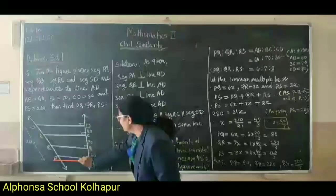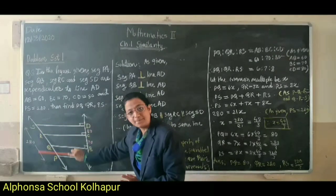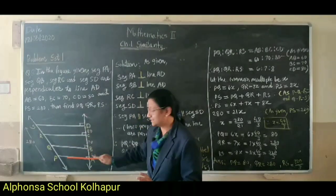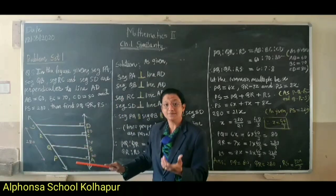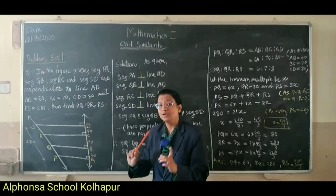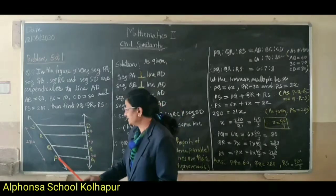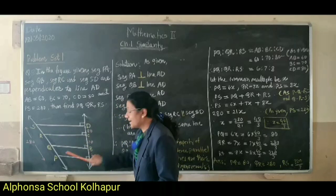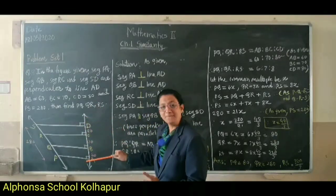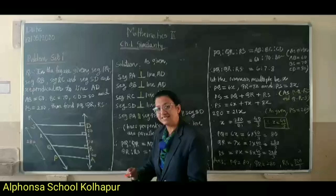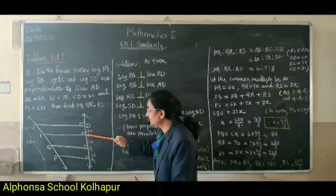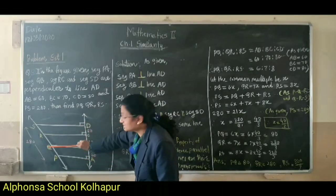Since PA, QB, RC, and SD are parallel to each other, we can consider these lines as transversals and apply the property of three parallel lines and their transversal. The property states that the ratio of the segments made by three parallel lines on one transversal equals the ratio on another transversal. So PQ upon QR is equal to AB upon BC.